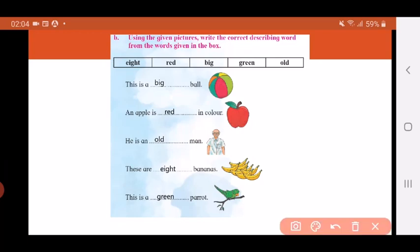Third one: He is an dash man. Look at the man. He is an old man.